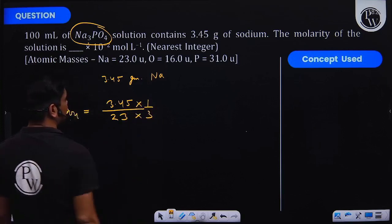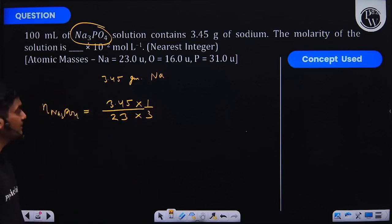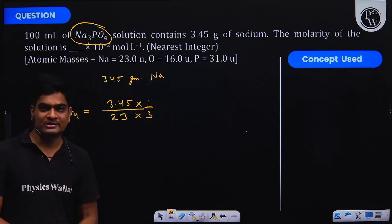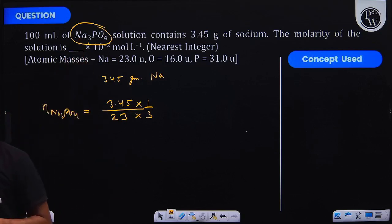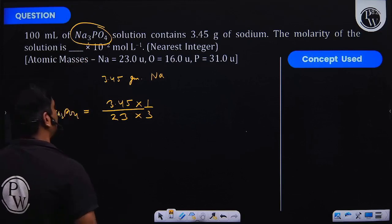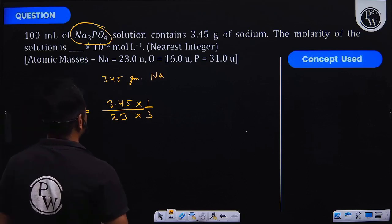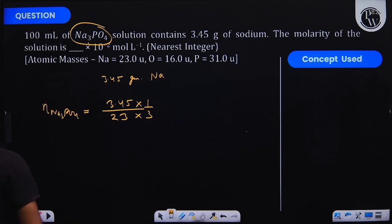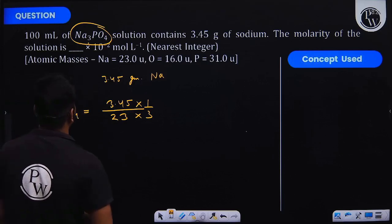You can see by seeing the formula of Na₃PO₄, because 3 sodium ions are contained by 1 Na₃PO₄ molecule. So we have multiplied by 1/3 to convert the moles of sodium into the moles of Na₃PO₄.